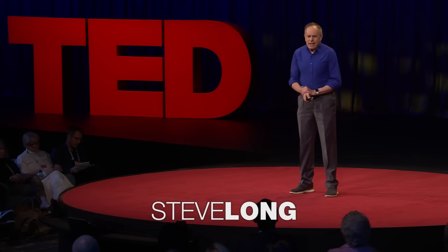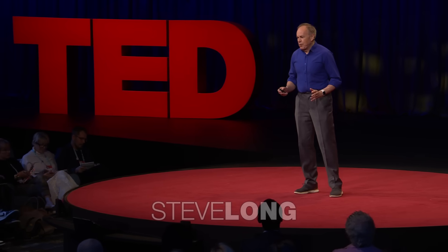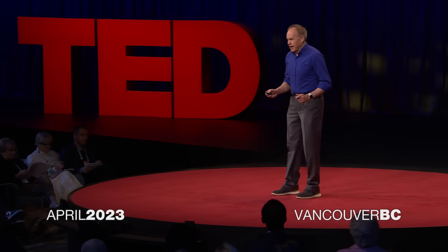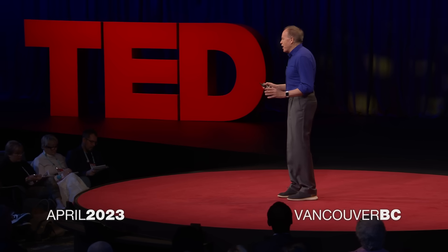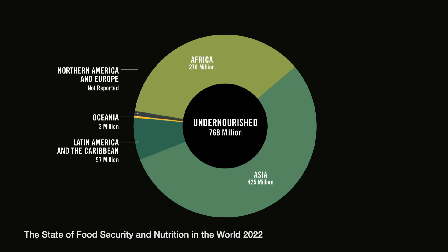Today, nearly one in 10 is food insufficient. That number has been rising every year since 2014, and it's forecast to become considerably worse over the next two to three decades. This is especially true for the poorer countries of Africa and Asia, where the rise in demand is outpacing the rise in our ability to supply.